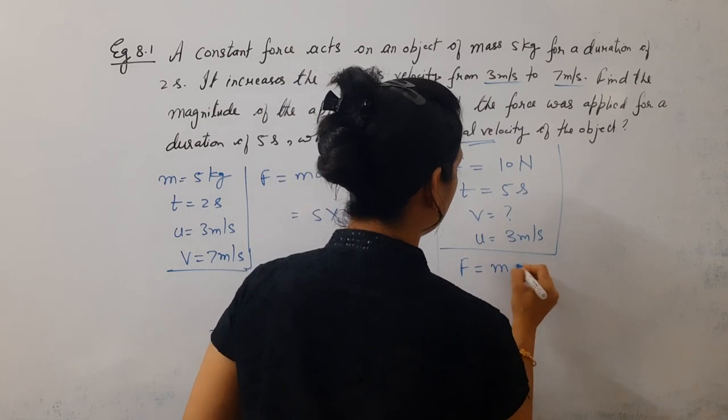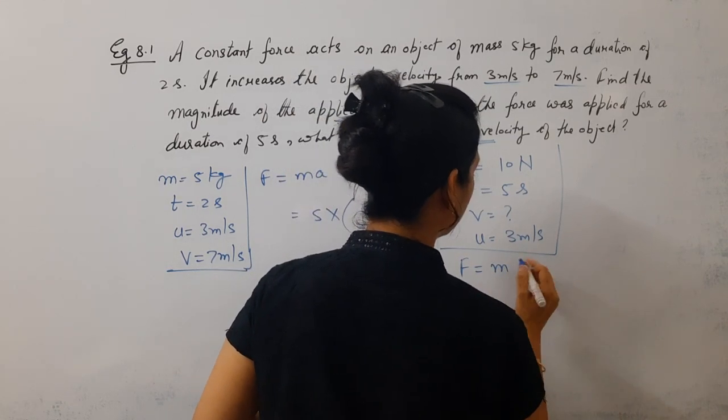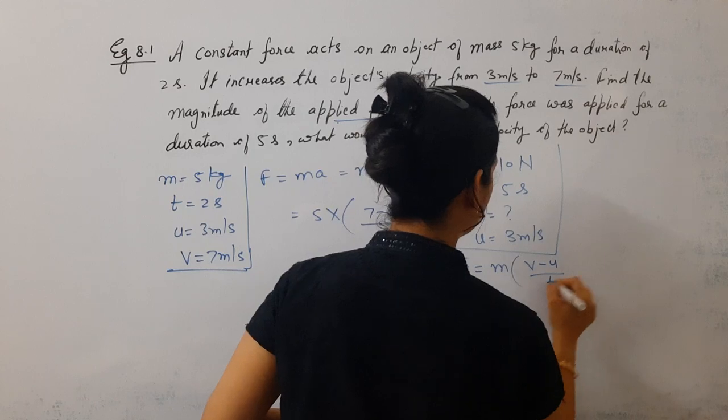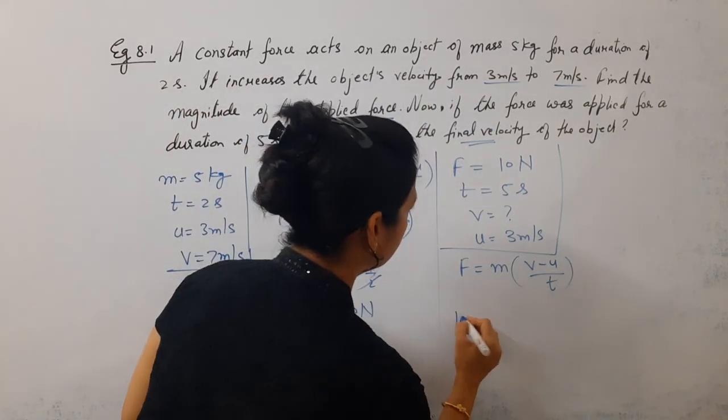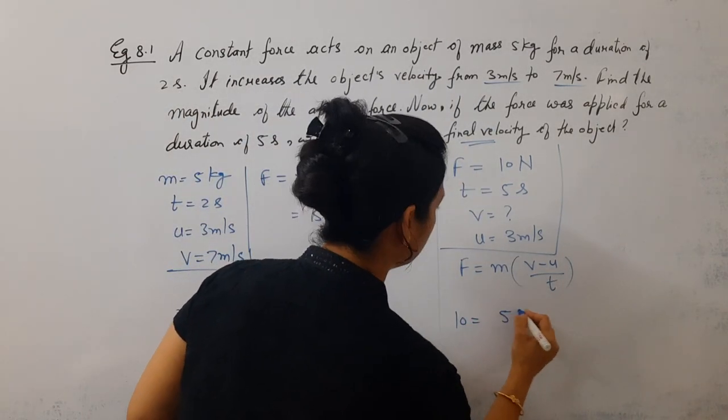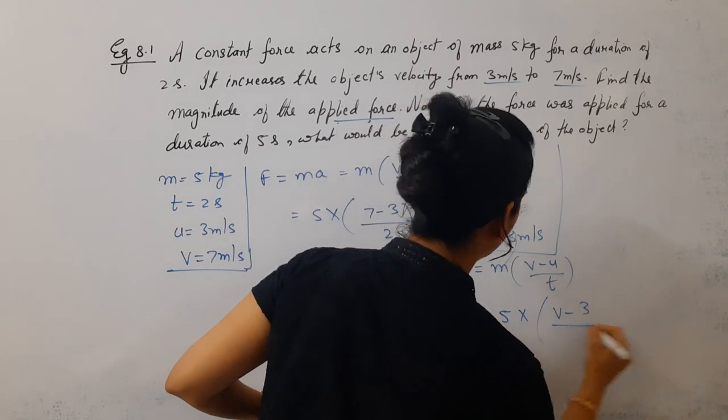The formula we have is F equal to M times V minus U upon T. Now what do you have? Force is 10, mass is the same 5 kg, V minus U upon T. We have all the values.